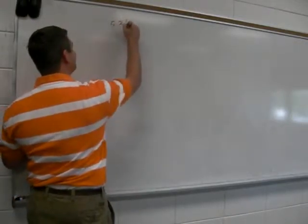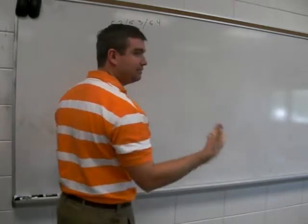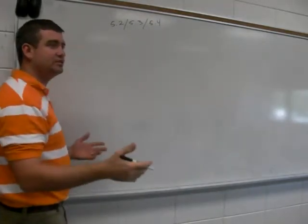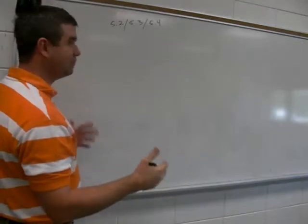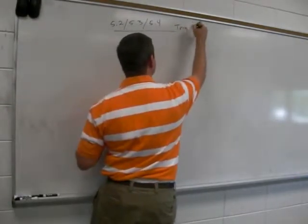All right, here we go. 5.2, 5.3, and 5.4. The book, for some reason, breaks them up into tangent and then cosine and sine differently. I'm doing them all at the same time, because it's easier if you learn them all at the same time.